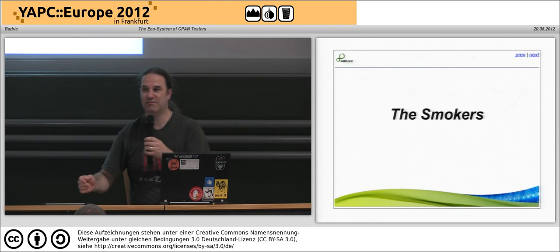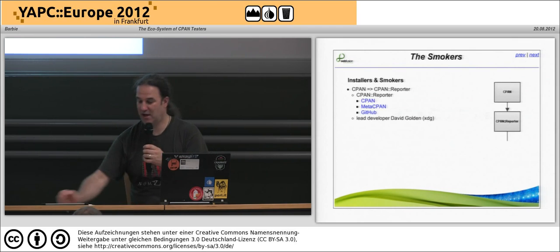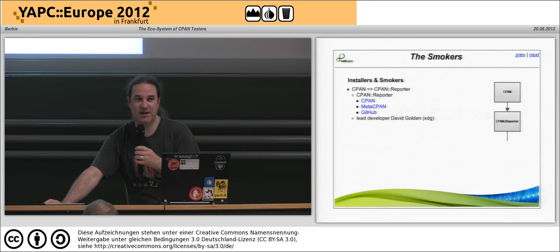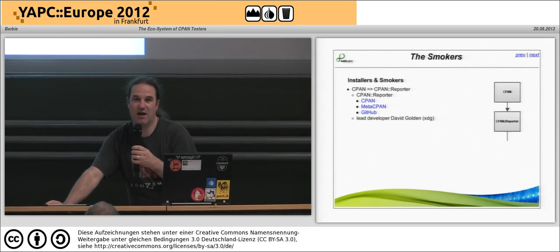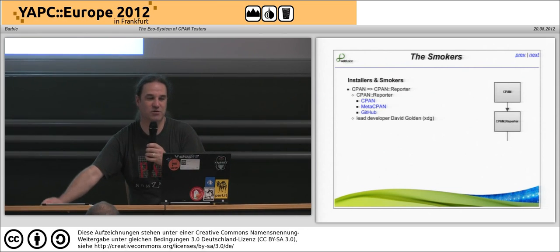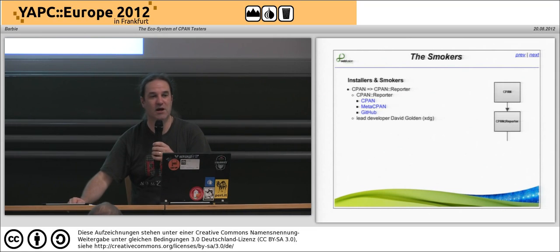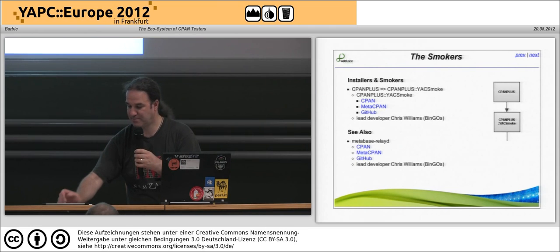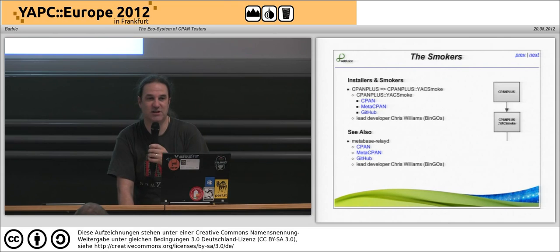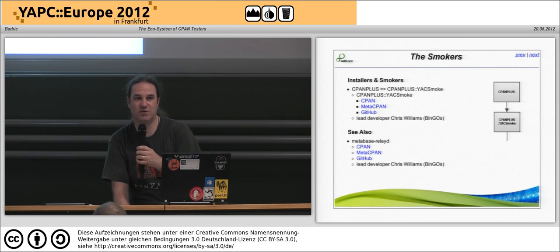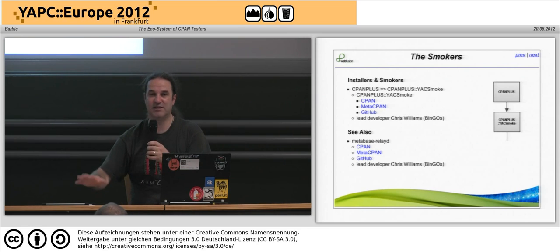Lastly we're going to look at some of the APIs available if you want to manipulate data. First off we have the smokers. Essentially we have three sets of smokers. The first is CPAN and CPAN Reporter — probably the most prolific — which is a plug-in into CPAN to allow anyone installing modules to submit test reports to the metabase. There are also other smoker automation bots available. We have CPAN Plus and CPAN Plus YAK Smoke, written by bingos, which is another version of the CPAN Reporter style of testing.